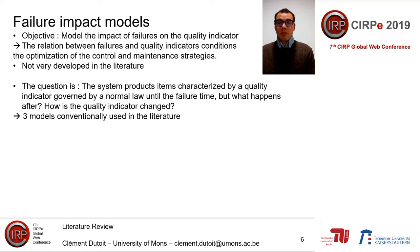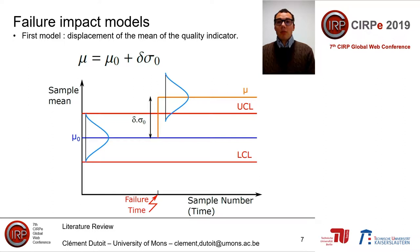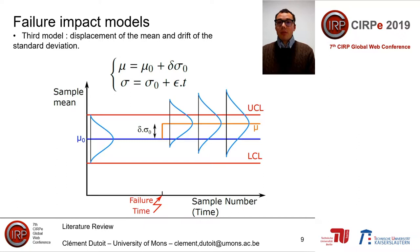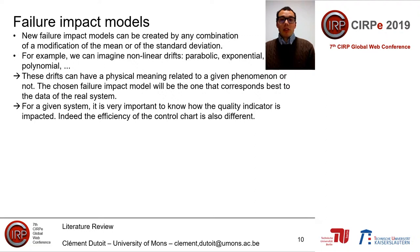The first model, explained in slide seven, is a displacement of the mean of the quality indicator: the indicator is normal until the failure time, then the mean changes to produce a different quality indicator. The second model, explained in slide eight, is a linear drift in the quality indicator. The third model, explained in slide nine, involves a displacement of the mean and a drift of the standard deviation — after the failure, both the mean and standard deviation change. New failure impact models can be created by any combination of modifications in the mean or standard deviation, such as non-linear drifts: parabolic, exponential, or polynomial. These drifts can have a physical meaning related to a given phenomenon or not.